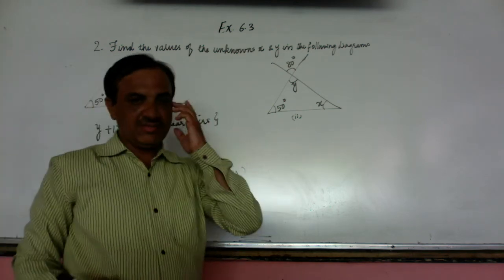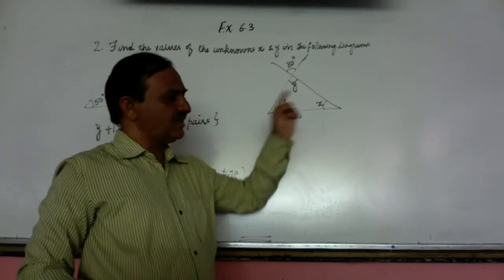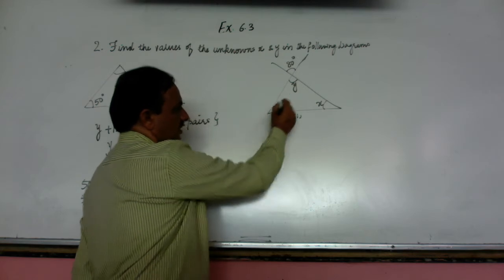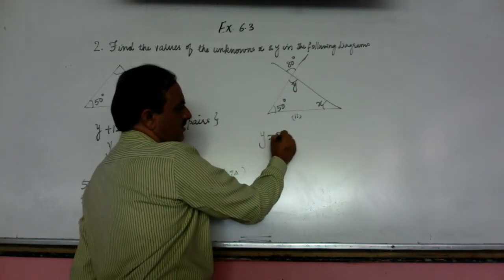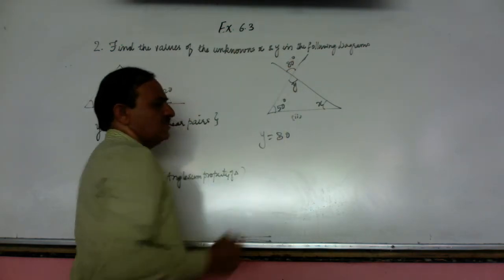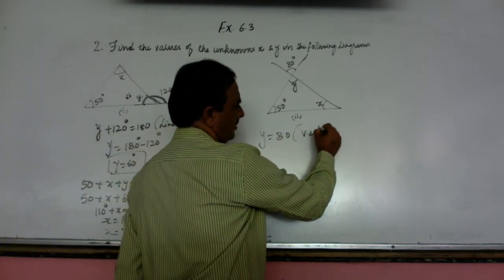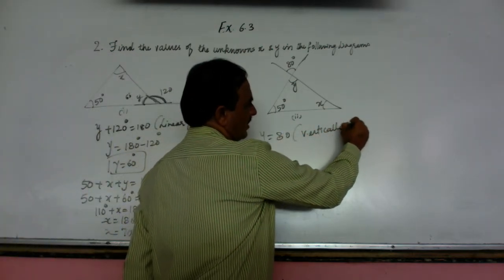If we come to this question number second, there also x and y, two values are there, we have to find. First you can find that y is equal to 80 degree because they are vertically opposite angles.